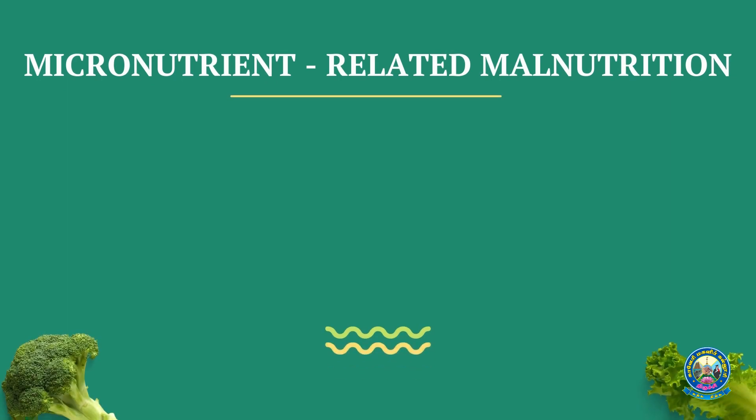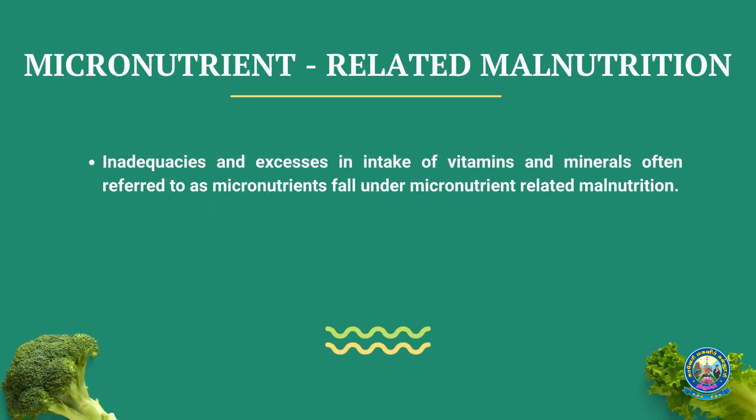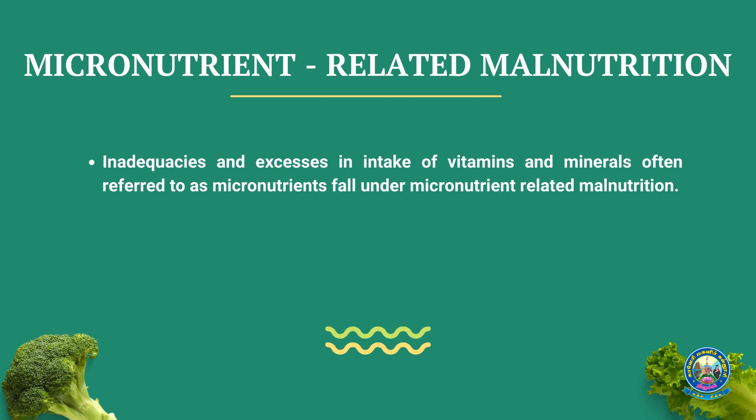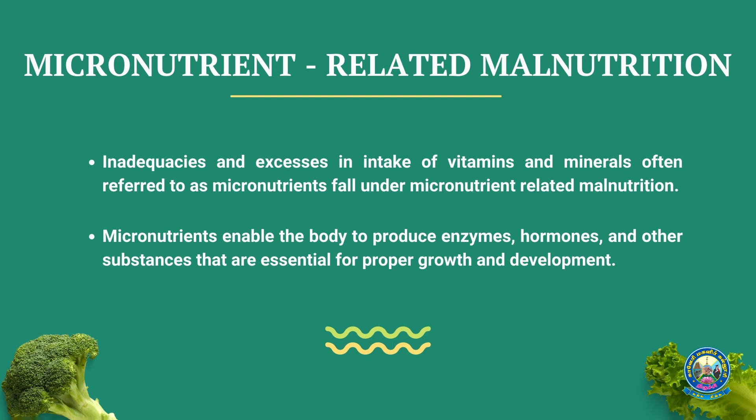Moving on to micronutrient-related malnutrition — you may wonder why this was not included under undernutrition. It is because even overnourished people may be deficient in one or more micronutrients, so it is common to both undernutrition and overnutrition. Micronutrient-related malnutrition includes inadequacies and excesses in the intake of vitamins and minerals. Micronutrients enable the body to produce enzymes, hormones and other substances essential for proper growth and development.